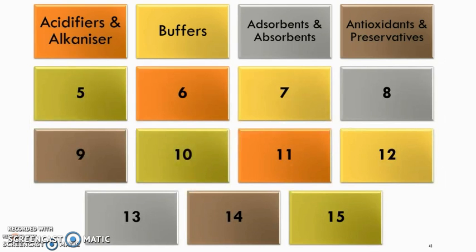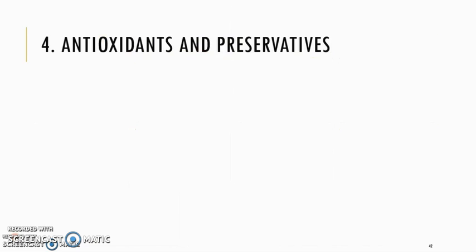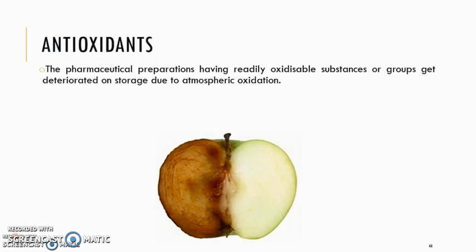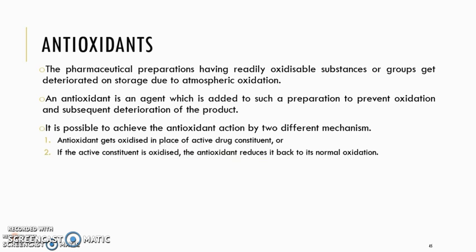Next is antioxidants and preservatives. Almost all pharmaceutical products have substances that can be easily oxidized by the atmosphere. To prevent oxidation, you need antioxidants. Antioxidants can act by two different mechanisms: the first is where the antioxidant acts as a reducing agent, and the second is where the antioxidant reduces or reverses the normal oxidation in the product.